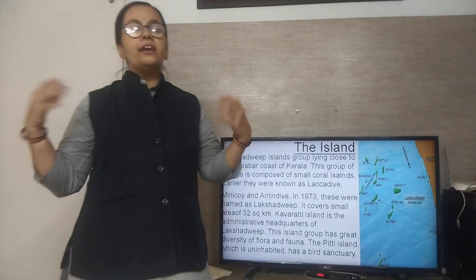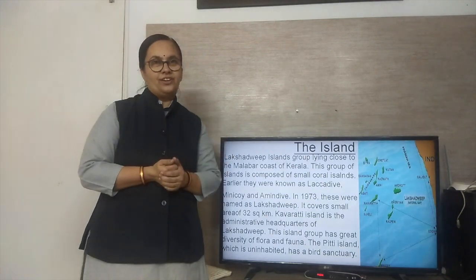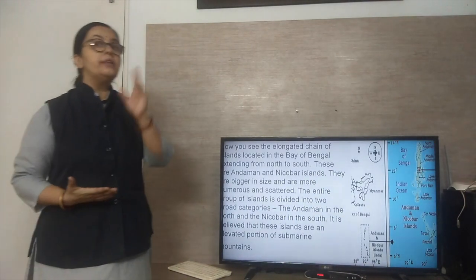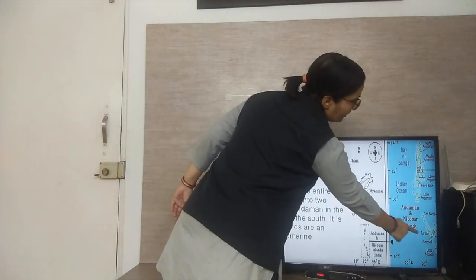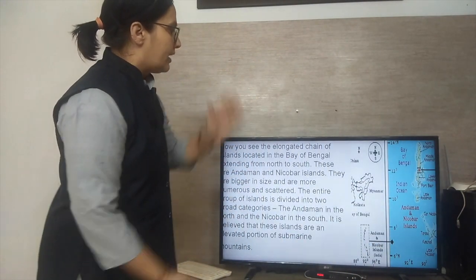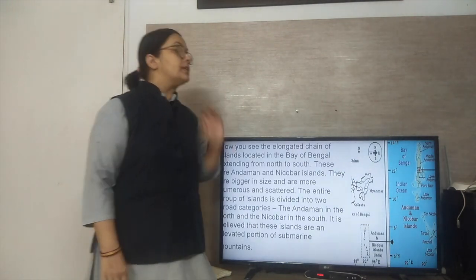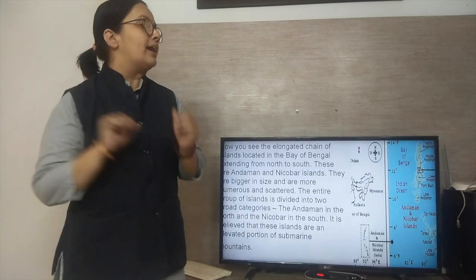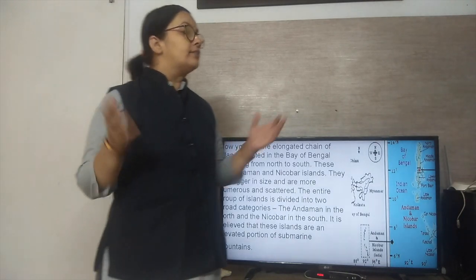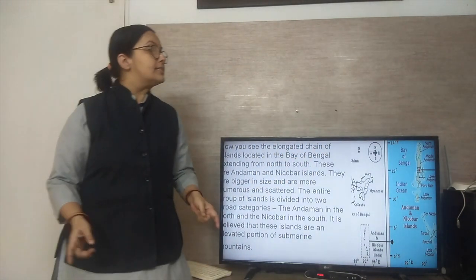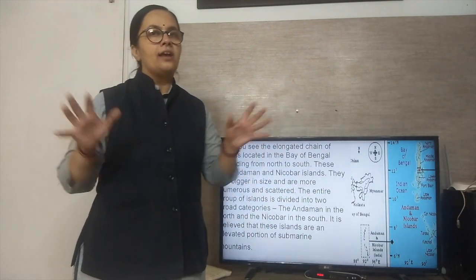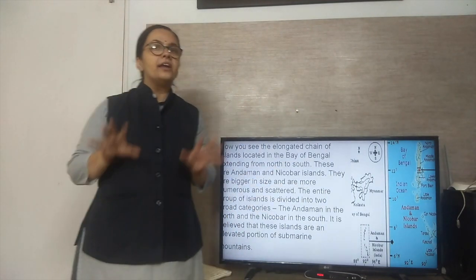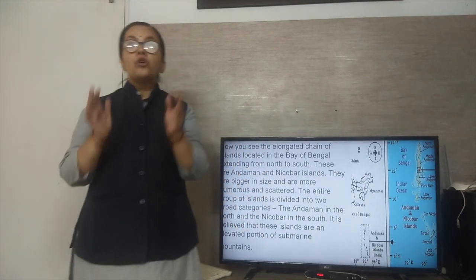The Pitti Island is uninhabited and has a bird sanctuary where you can see a variety of birds. Now we will look at the Andaman and Nicobar Islands. Andaman is one island and Nicobar is another — both are different islands forming an elongated chain. They are located in the Bay of Bengal, running from north to south. These islands are bigger in size and more numerous, though all the islands are scattered. The entire island group is divided into two groups: Andaman in the north and Nicobar in the south.